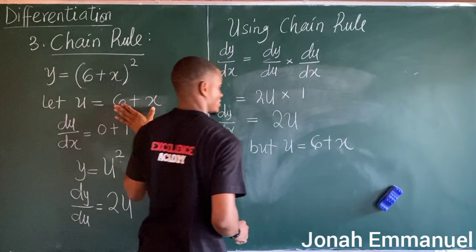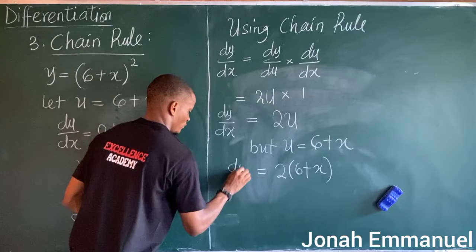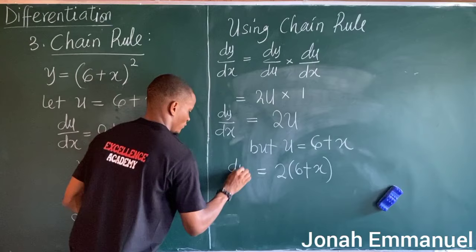Since u equals 6 plus x, this becomes 2 times (6 + x). So dy/dx equals 2(6 + x), and that is the final answer using chain rule.